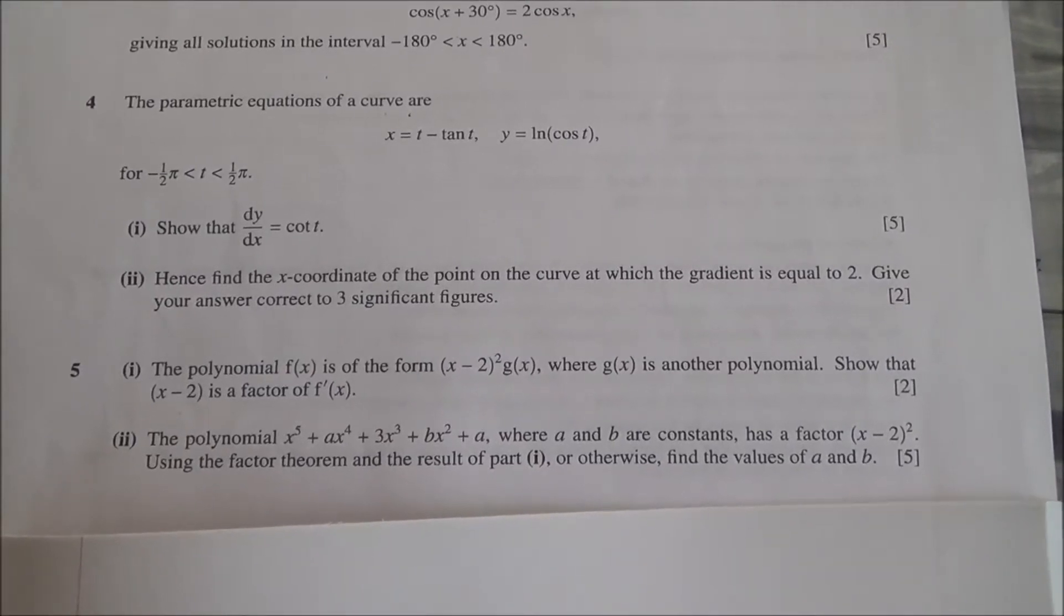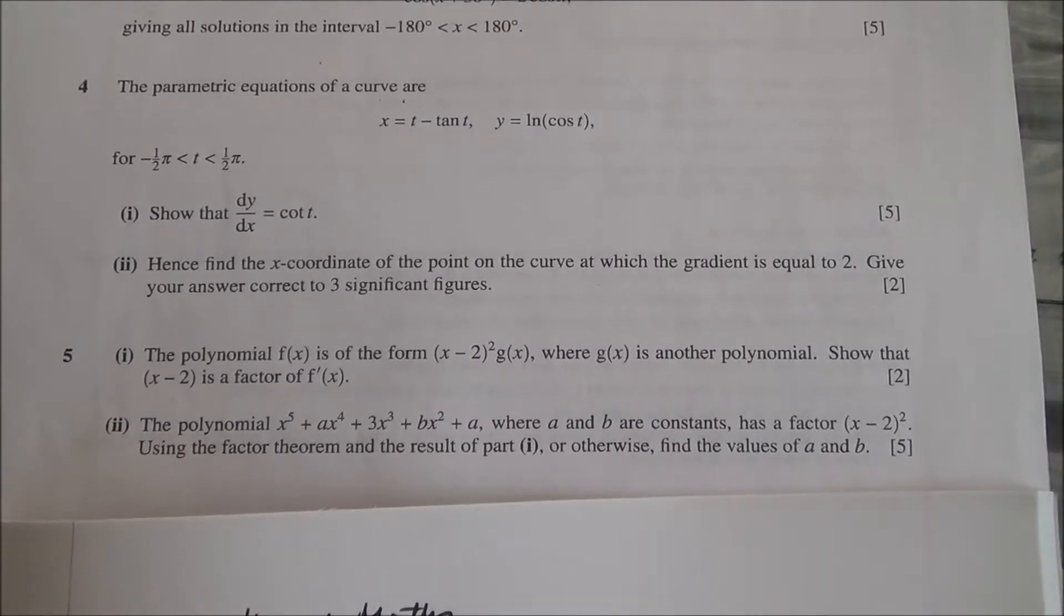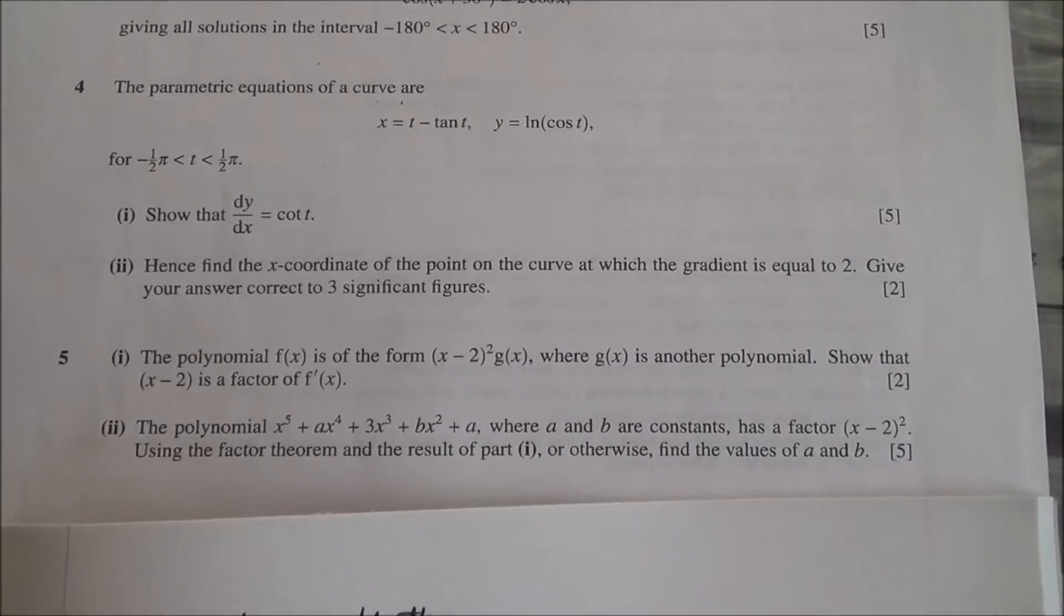Hi, question number 5. The polynomial f(x) is of the form (x-2)²g(x), where g(x) is another polynomial.